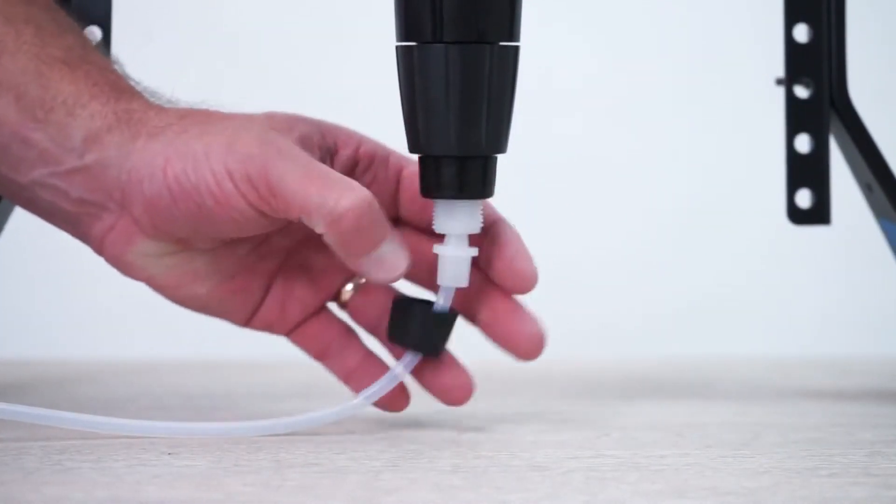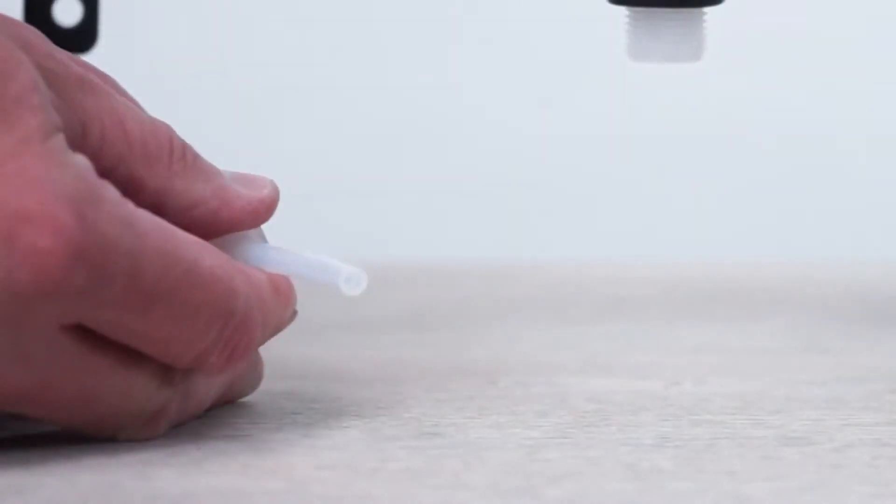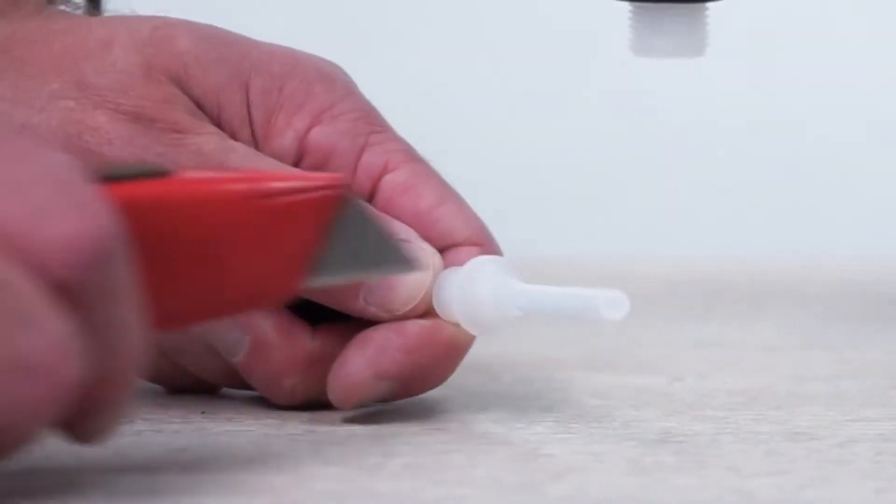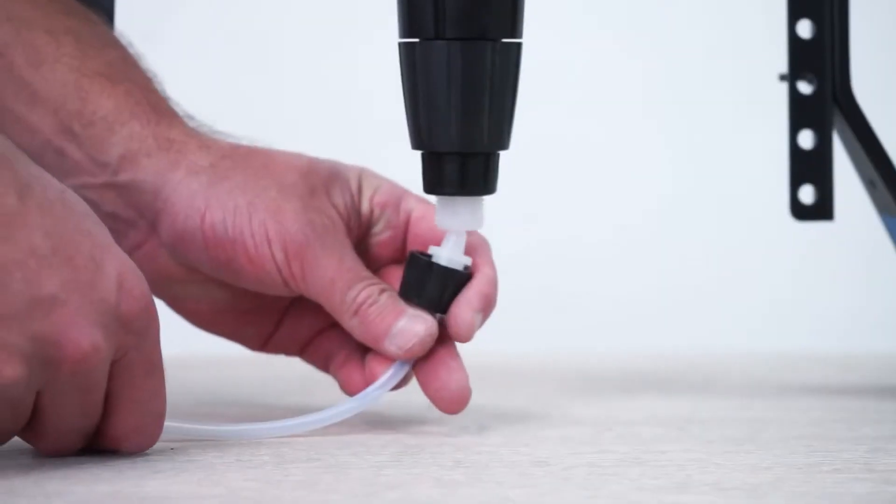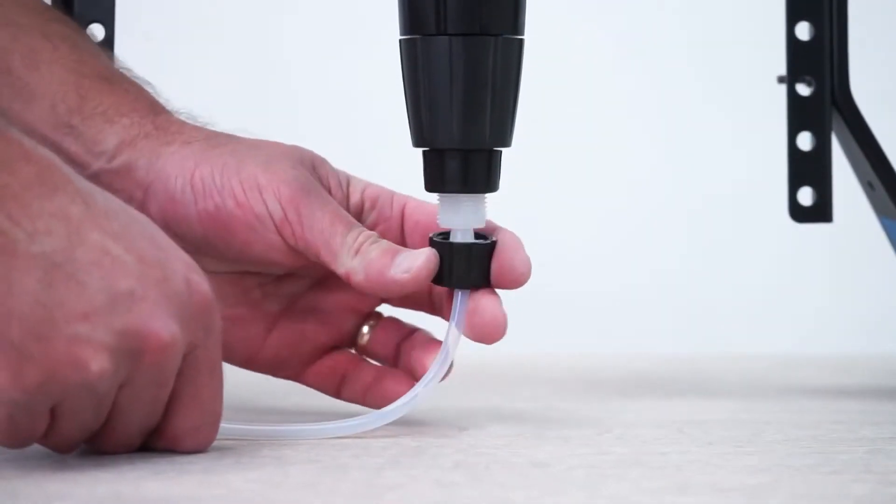If there is no suction, unscrew and remove the hose nut. Slide the ferrule back and cut a half inch off the top of the hose. Reposition the ferrule like this. Then insert the hose back into the barb and hand tighten the nut.